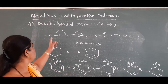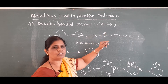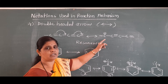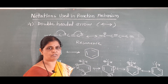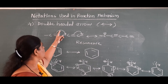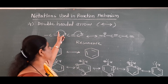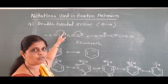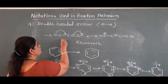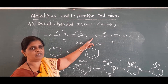The next notation is the double-headed arrow. This double-headed arrow is used to show resonance between two structures. For example, in a conjugated system, resonance takes place. Resonance means redistribution of pi electrons, and that redistribution is shown by the double-headed arrow. The pi electrons move between the two carbon atoms, forming a resonating structure. Remember: the curved arrow shows movement of a pair of electrons, while the double-headed arrow shows resonance between two resonating structures.